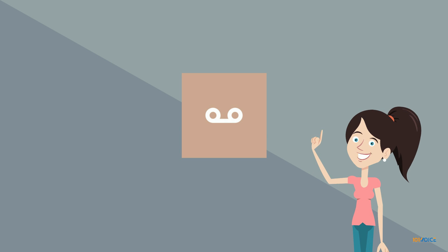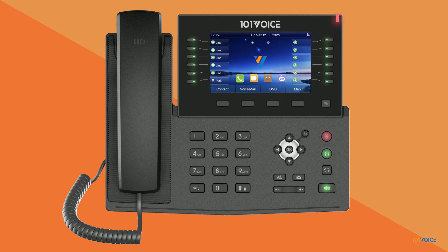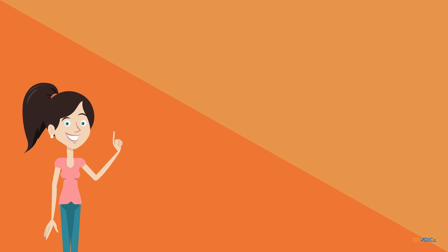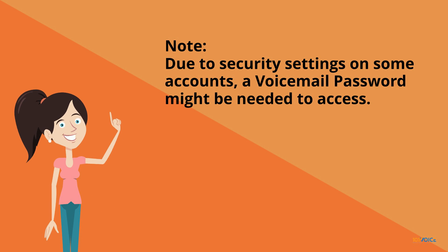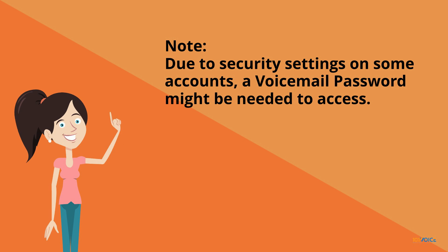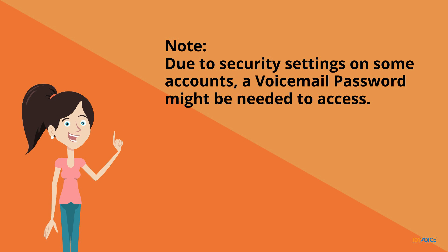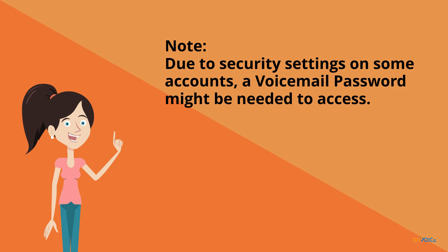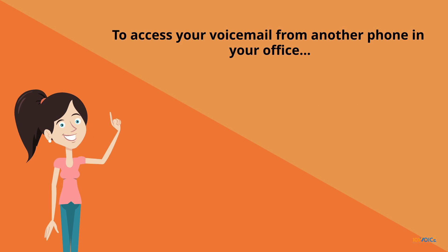Now, let's go over how to use your voicemail. To access your voicemail from your phone, press the voicemail button or the voicemail soft key. Alternatively, you can pick up the handset or press the speaker or headset key and dial star 1. As long as you're calling from your phone, you don't need to enter your password — it'll log you in automatically. If your phone has access to more than one mailbox and you need to check a voicemail other than your primary, use the up arrow keys to highlight the voicemail icon and press OK.